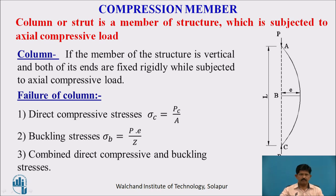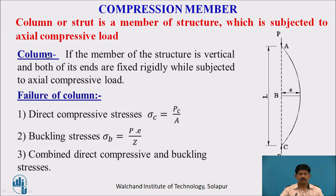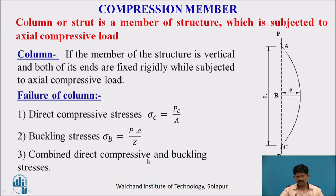What is a compression member? The compression member may be a column or a strut depending upon its position, which is subjected to an axial compressive load. A column is a structural member held vertically with both ends fixed rigidly, subjected to axial compressive load. The failure of a column may occur due to direct compressive stress, buckling stress, or a combined effect.